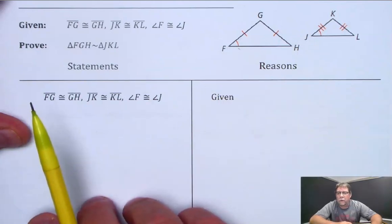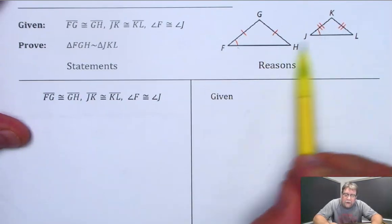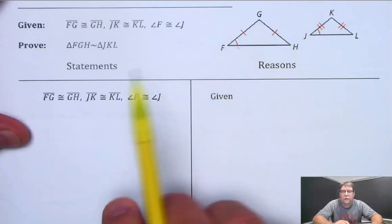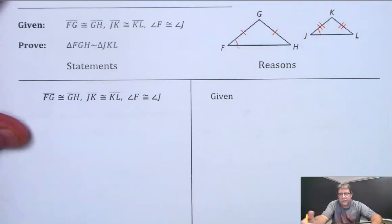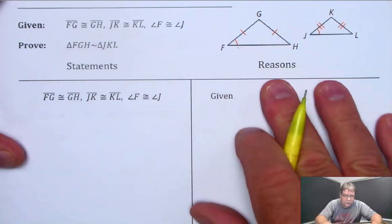So we're going to try to figure out a way to show that these two might be congruent, or those two might be congruent, so that we can use the AA similarity postulate. Let's see if we can do that.